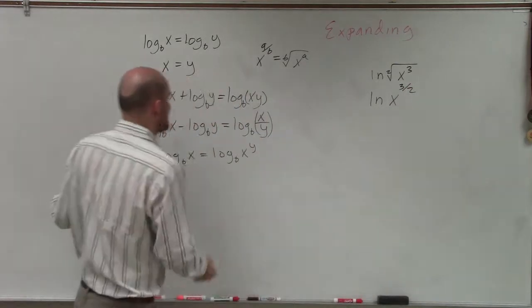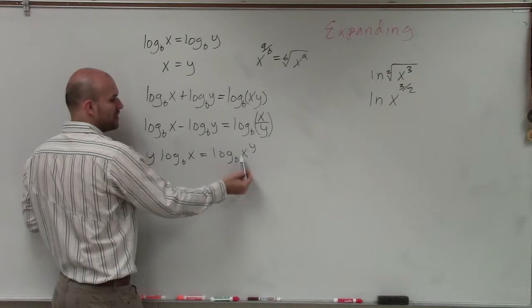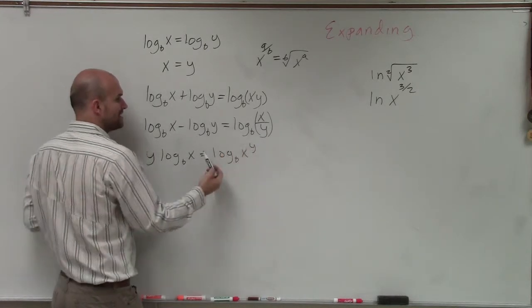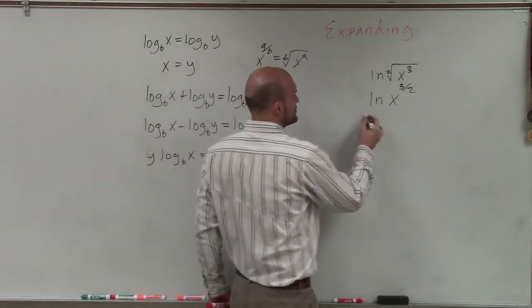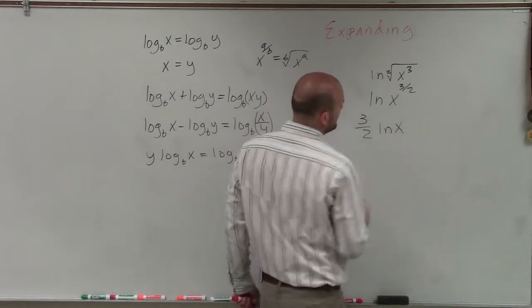Now, remember, by applying my expansion, if I have what I'm taking my logarithm raised to a power, I can rewrite that in front of my logarithm. So therefore, this would be 3 halves ln of x.